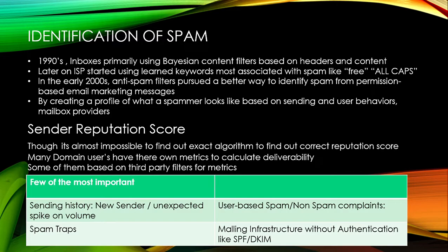At that point in time, ISPs used to filter out only those selected keywords and header contents. But as time grew, spammers became smarter and found ways to work around these algorithms, requiring constant updates. Later, ISPs started using learned keywords most associated with spam — words like 'free,' for example. You would have received emails saying 'free mobiles,' which is a catchy phrase used by spammers. Subject lines written entirely in capital letters were also added as spam identifiers.